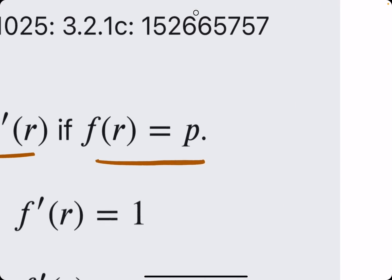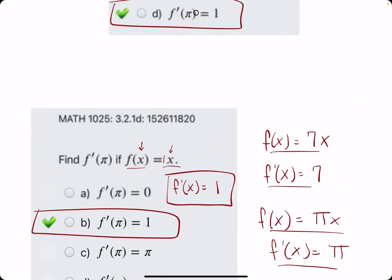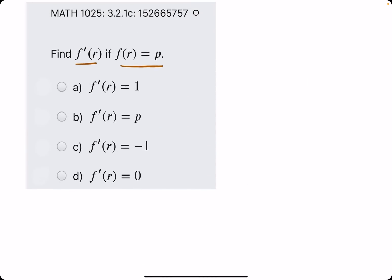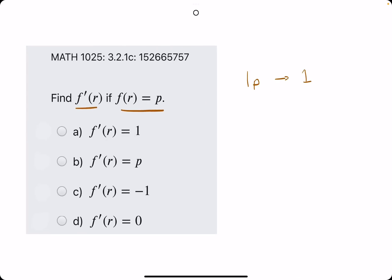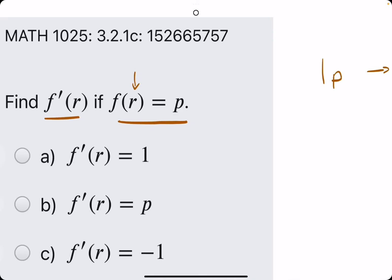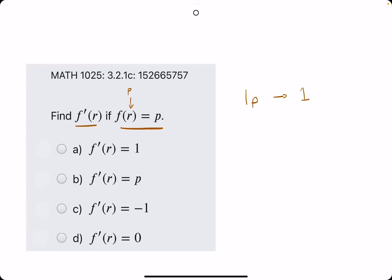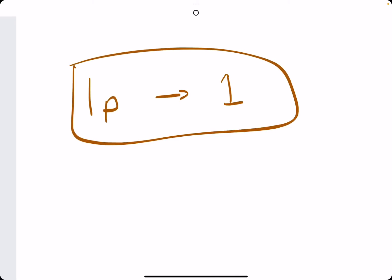Now, in the other problem, the one that came before this, it was 3.1.2d, we said multiple times that if we have 1p, then its derivative will just be 1. However, the input variable must be p in order for this to be true.